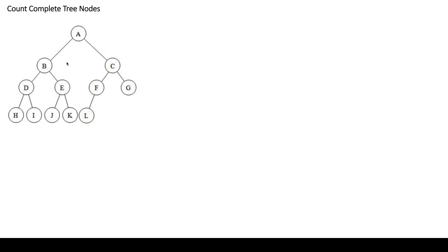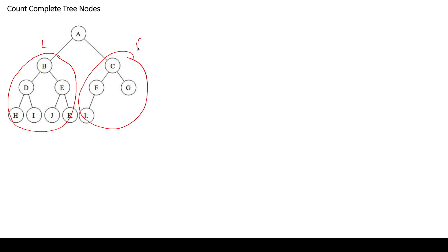The first approach is to write a recursive method that calls recursion for the left subtree and the right subtree. Getting l from the left and r from the right, we simply return 1 + l + r. This works in O(n) time where n is the number of nodes. However, in an interview this is not the expected solution, because we are not using any property of the complete binary tree.